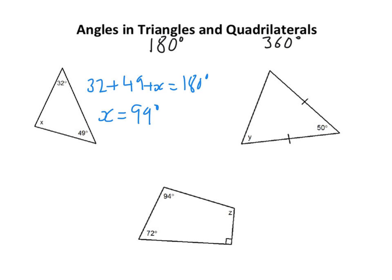I'm going to do Z next. Now you should know that we have 72, 94, Z, and what's that little square? That little square means it's 90 degrees.